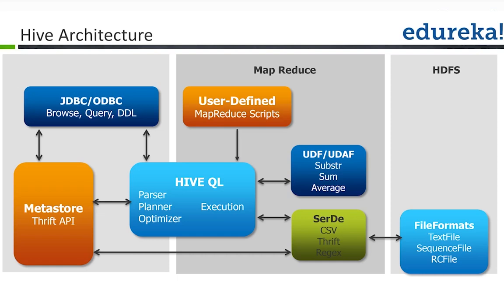In terms of storage, Hive supports text files — you can store your backend data in text files. If you want to store your data as a sequence file, you can do that. If you want to store data in RC file format, that is a columnar way to store data inside Hive — if you are using selective columns in your Hive processing, you can define your Hive table to store data in RC file format for better performance.